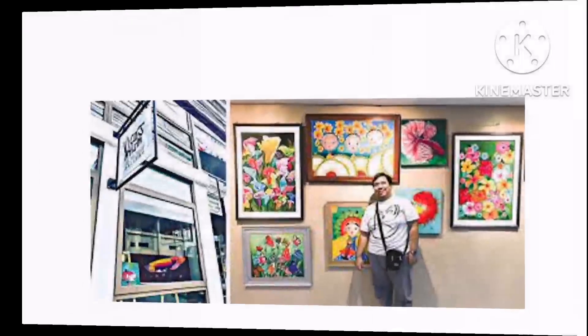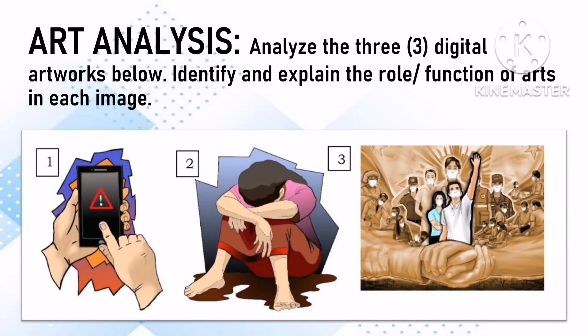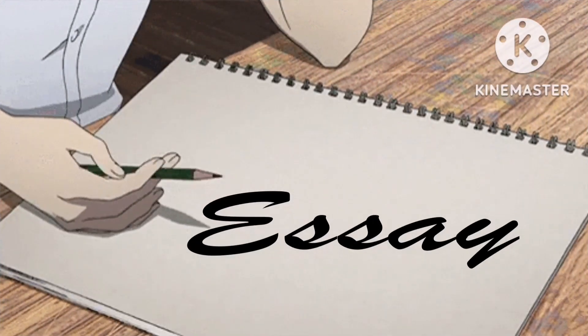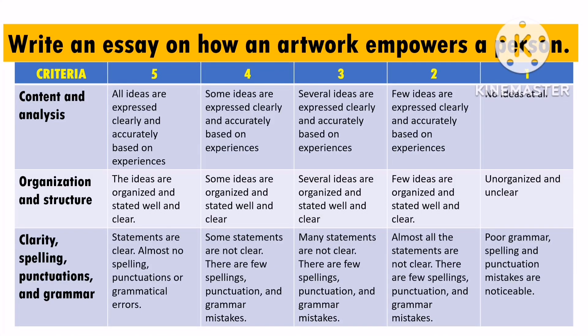Let's test your understanding of our lesson for today with this art analysis. Analyze the three digital artworks below and identify and explain the role or functions of arts in each image. The next activity is to make an essay. You are going to write an essay on how an artwork empowers a person, using the criteria as your reference: content and analysis, organization and structure, clarity, spelling, punctuation, and grammar.